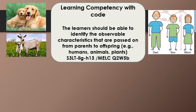Learning competency with code: The learners should be able to identify the observable characteristics that are passed on from parents to offspring.